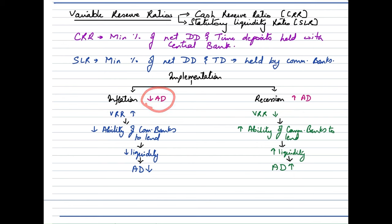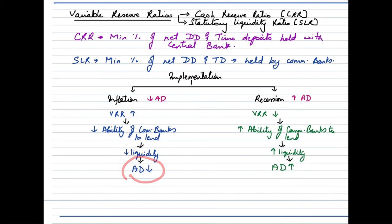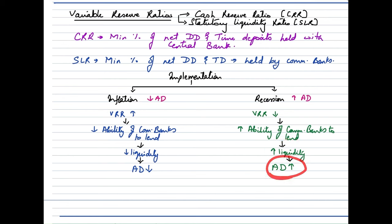During inflation, since the agenda is to bring down aggregate demand, variable reserve ratios are raised. The moment these percentages go up, it reduces the ability of commercial banks to lend out funds because they are left with less liquidity, and since fewer loans are given out, aggregate demand comes down. During a recession, the variable reserve ratios are slashed down, which increases the ability of commercial banks to loan out funds due to increased liquidity, thereby raising aggregate demand as people have more funds available to spend.